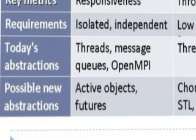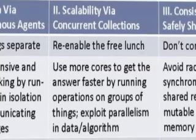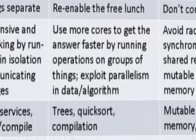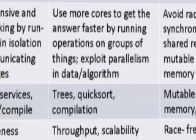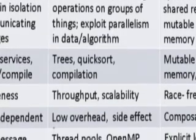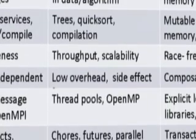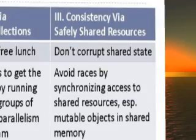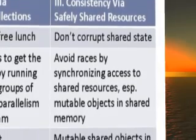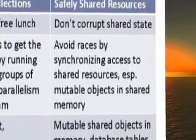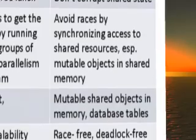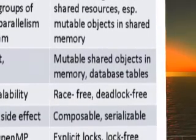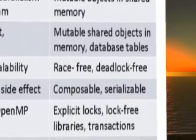But to get the answer faster is pillar two's territory: scalability. We want to exploit parallelism in data structures and algorithm structures. Today thread pools and OpenMP cover this territory, but we want to do better. And then finally, the third pillar — once you've expressed all this concurrency — you're going to step on your objects and corrupt them. We don't want that. We want programs that are race-free and deadlock-free, and we have a long way to go.